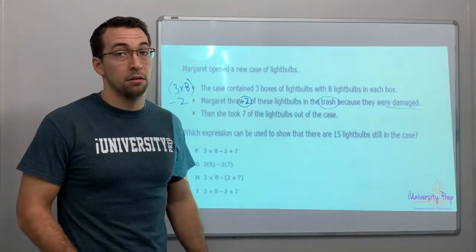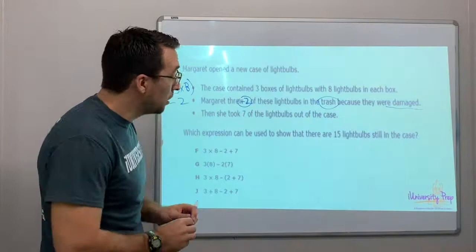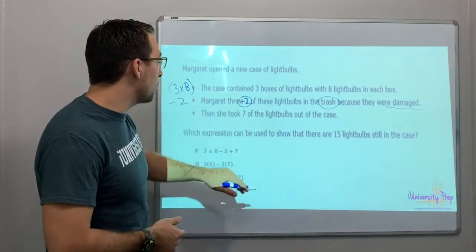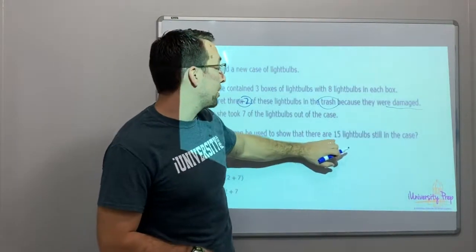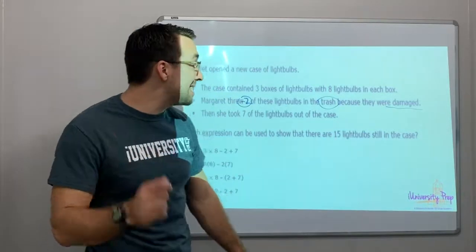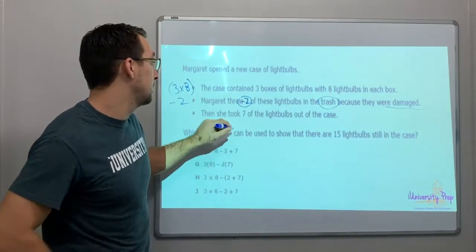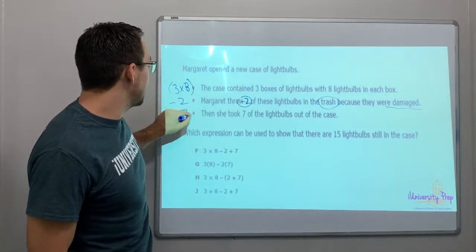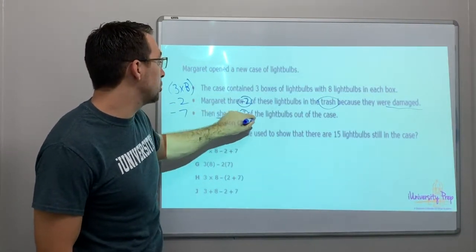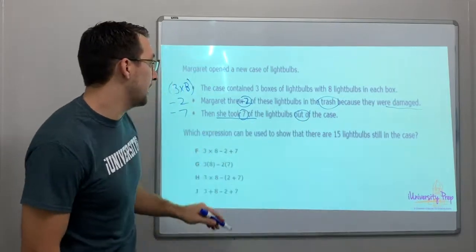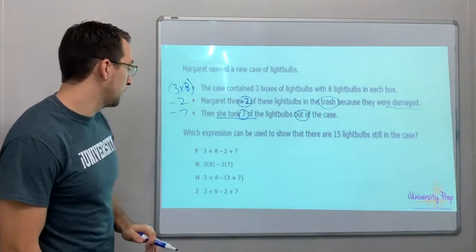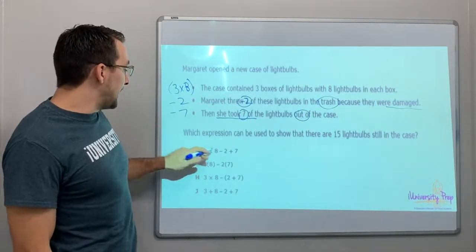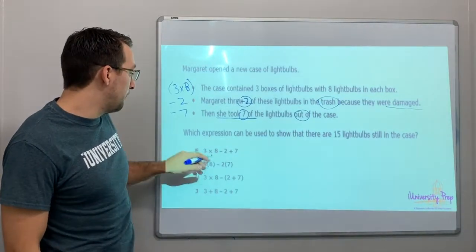Then she took seven of the lightbulbs out of the case. So she took seven more. Which expression can be used to show that there are 15 lightbulbs still in the case? So minus seven - this is minus seven again because she took them out. She took out seven lightbulbs out of the case. 3 times 8 minus 2 minus 7.